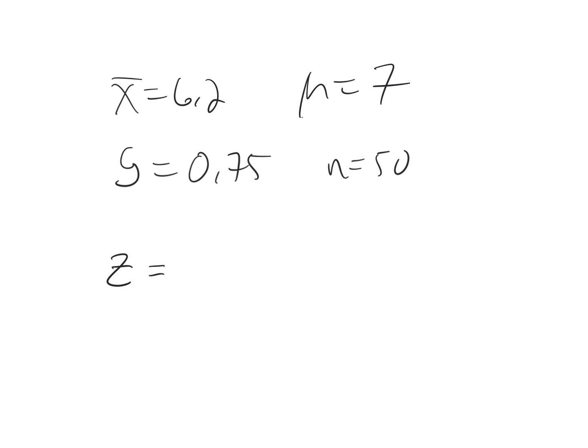This is a sampling distribution because we're dealing with samples. The first part of the z-score, sorry this is the t-score not a z-score, it gets calculated the same way. The t test statistic is 6.2 minus 7 over 0.75 divided by the square root of 50. This is the standard deviation for all the sampling distributions.